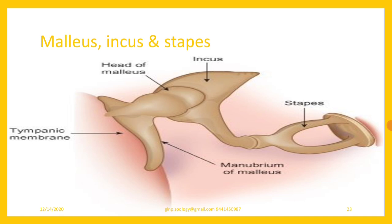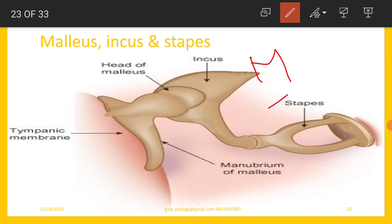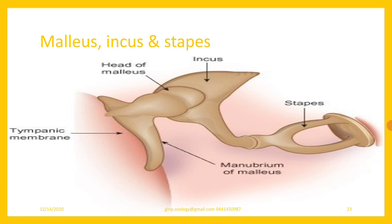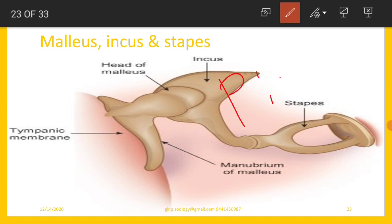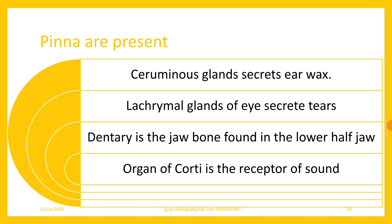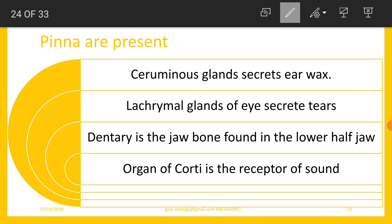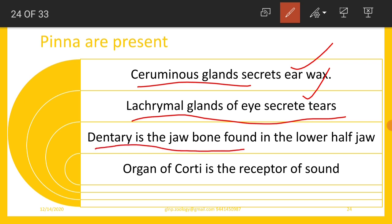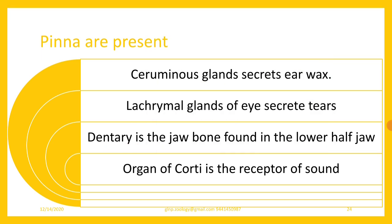In the ear we find three sequential bones: malleus, incus, and stapes. Mammals also contain external ears called pinna — the presence of pinna is an important characteristic feature of mammals. Inside the ear there are ceruminous glands that secrete earwax. Lacrimal glands of the eyes secrete tears. The dentary is the jaw bone found in the lower jaw, and the organ of Corti is the receptor of sound in the mammalian ear.